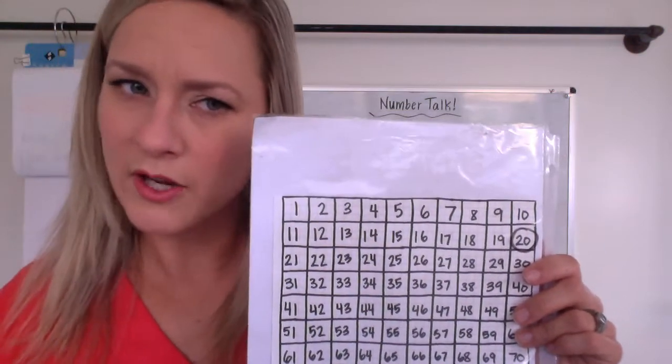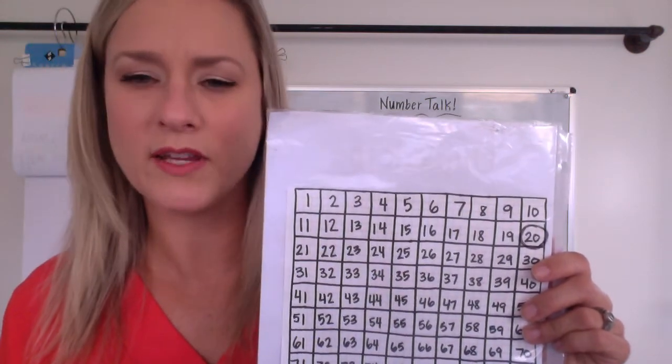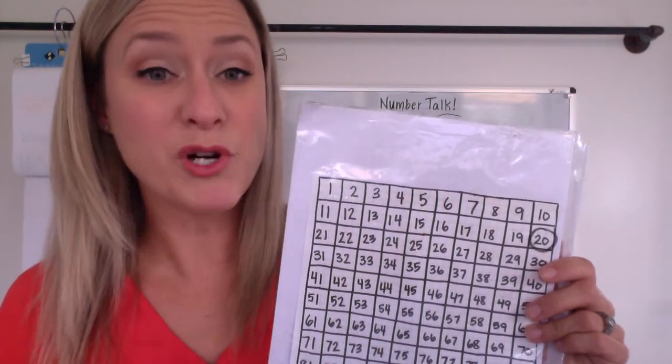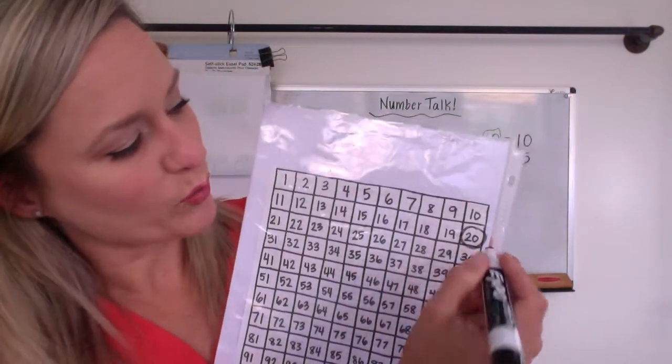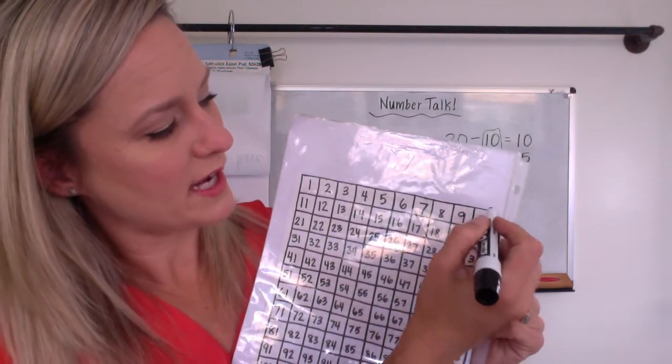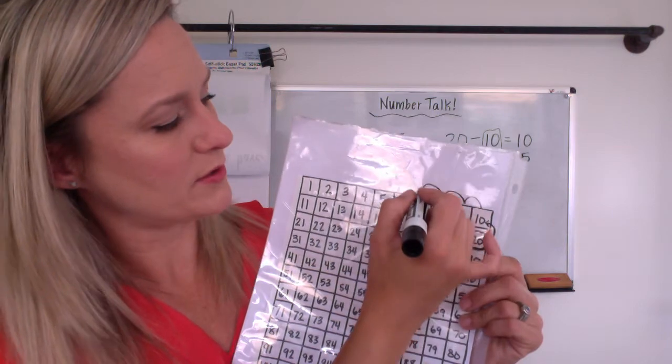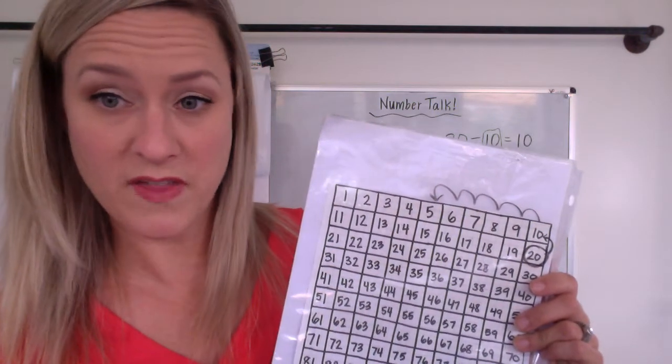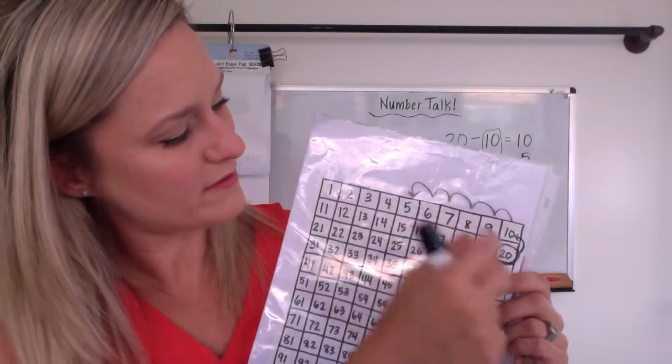All right, we already know what the answer is, right? We already know the answer is five. So my question was, how would we move on the 120 chart? Would you hop back a row of 10? And then go one, two, three, four, five more back? Maybe you would do that. So minus 10 minus five.